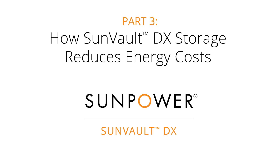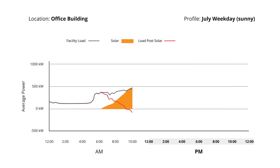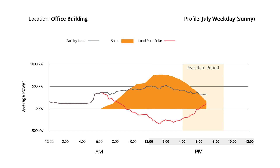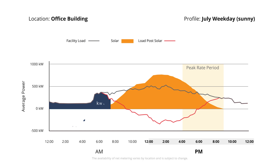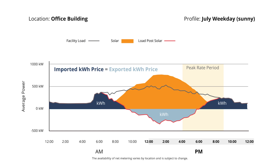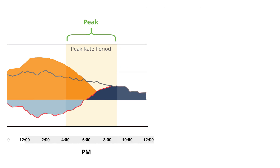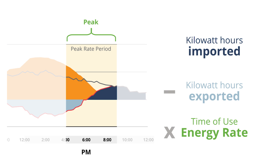Another way customers can save money with Sunvault DX storage is by shifting when they buy energy from the grid over the course of a day. Let's reexamine the load graph we used for demand charge savings. Instead of focusing on demand, we're looking at the amount of energy pulled, or imported, from the grid, as well as the energy sent back or exported to the grid via net metering over the course of this typical July weekday after solar has been installed. This energy is measured in kilowatt hours and is generally represented by the areas above and below the red load post-solar line and the zero kilowatts average power line. This utility offers full retail net metering, which means the import and export prices for electricity are exactly the same. The utility applies a different rate for electricity during the peak and off-peak time of use periods, so the total cost of energy for each period equals the amount imported minus the amount exported, multiplied by that period's energy rate.